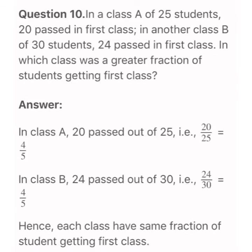The last question of this exercise: In class A of 25 students, 20 passed in first class. In class B of 30 students, 24 passed in first class. In which class was the greater fraction of students getting first class? In class A, the fraction is 20 by 25, which reduces to 4 by 5. In class B, the fraction is 24 upon 30, which also reduces to 4 by 5.